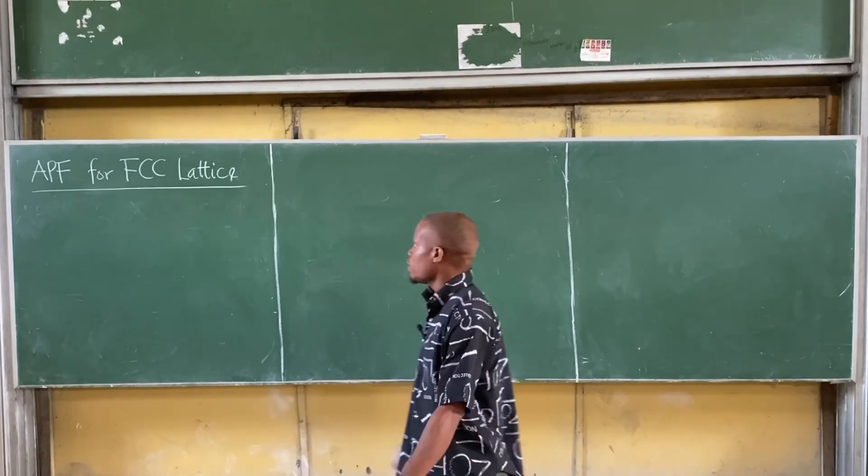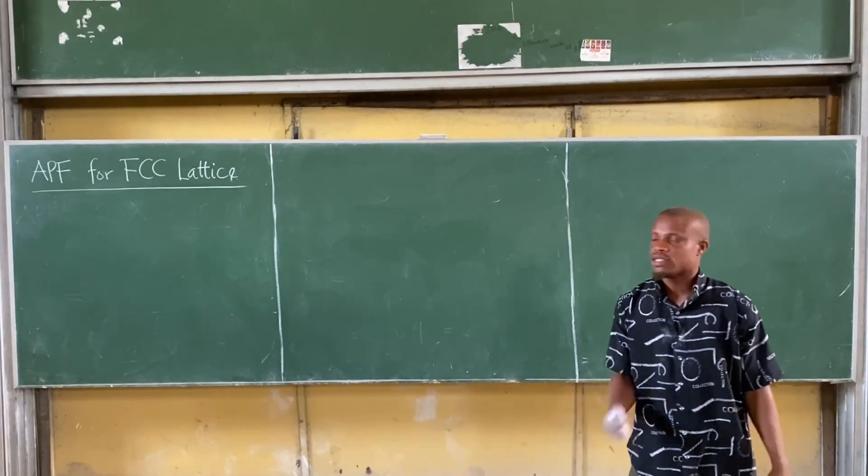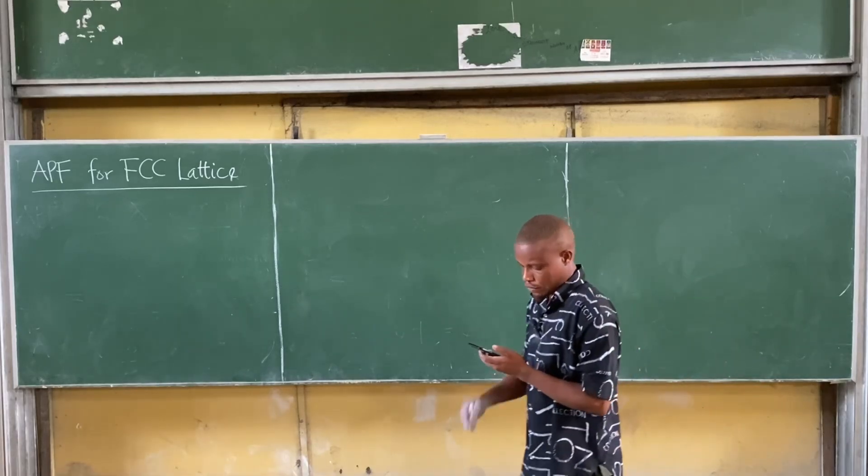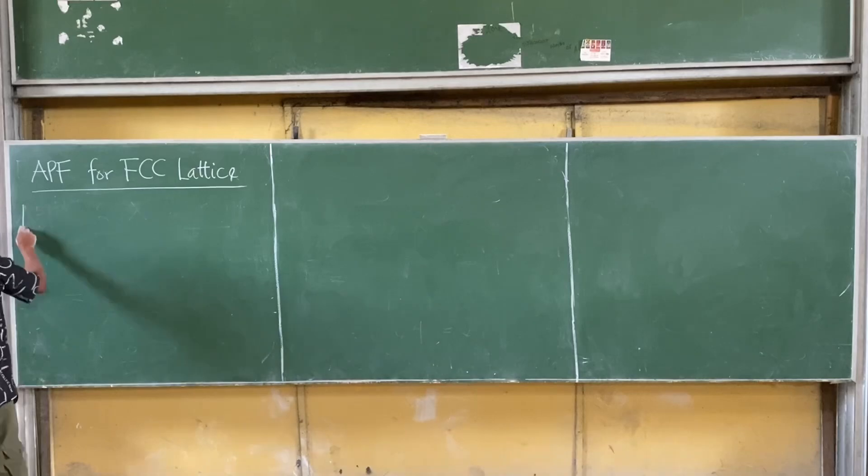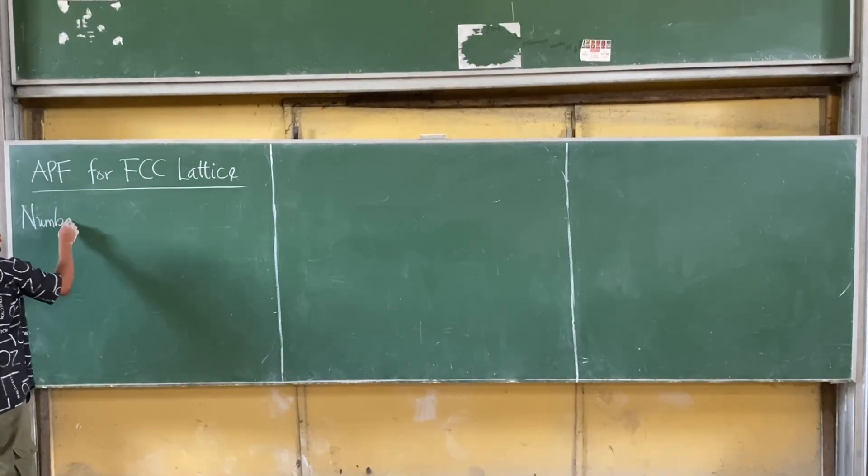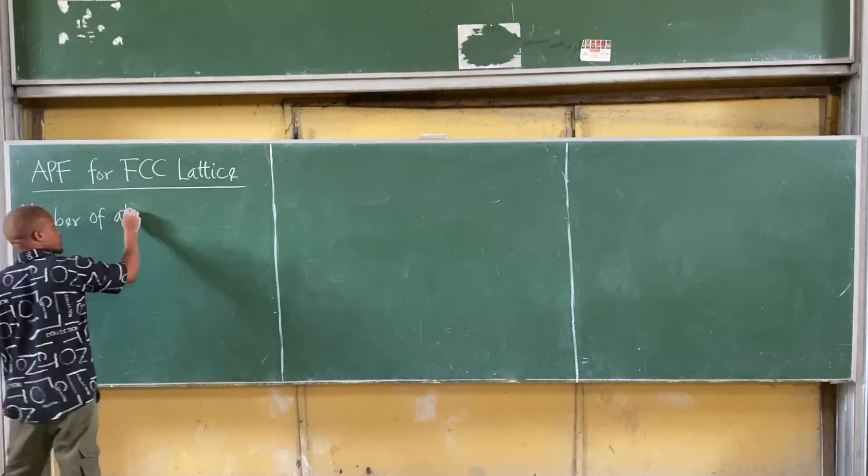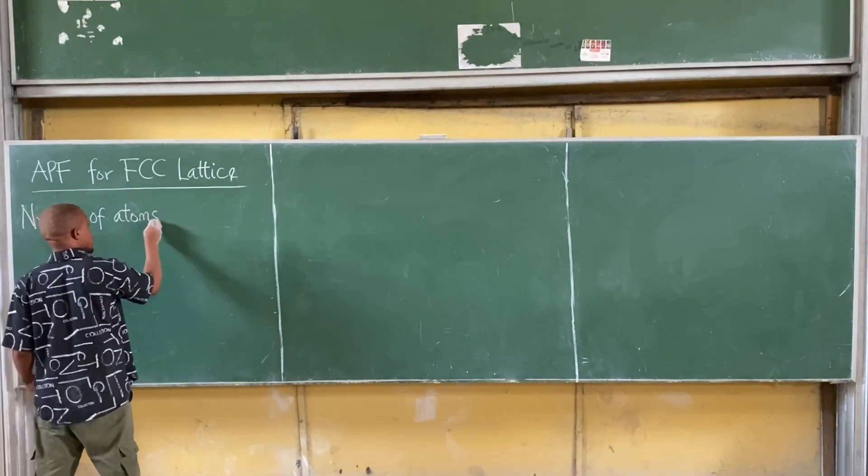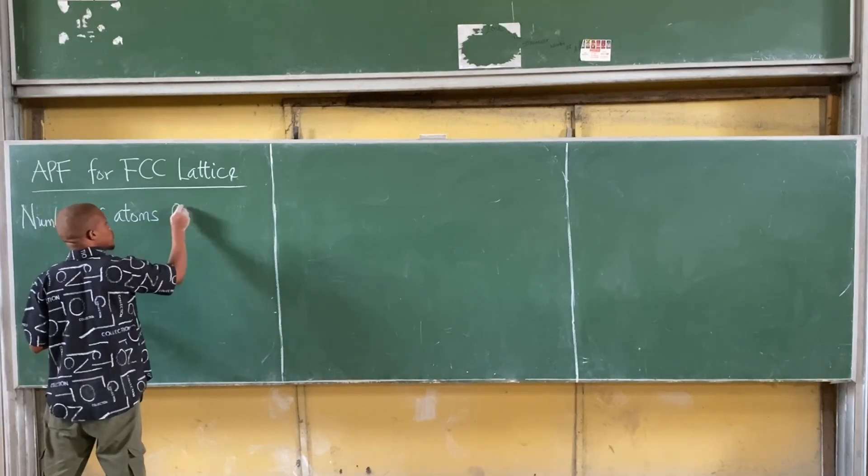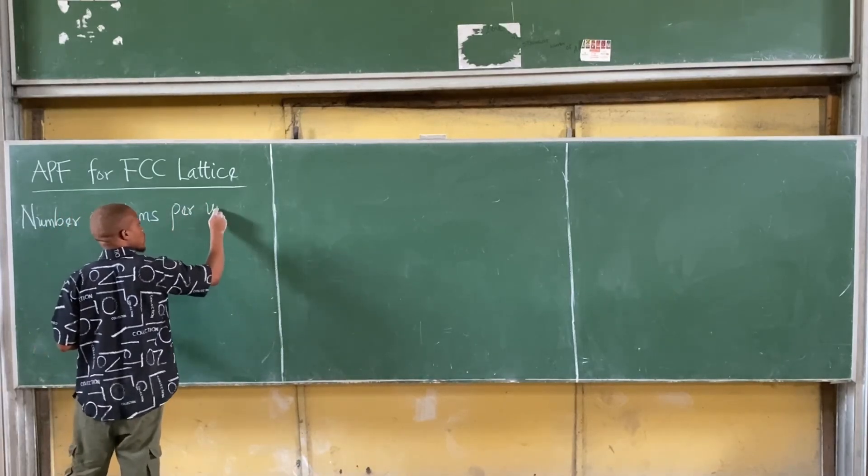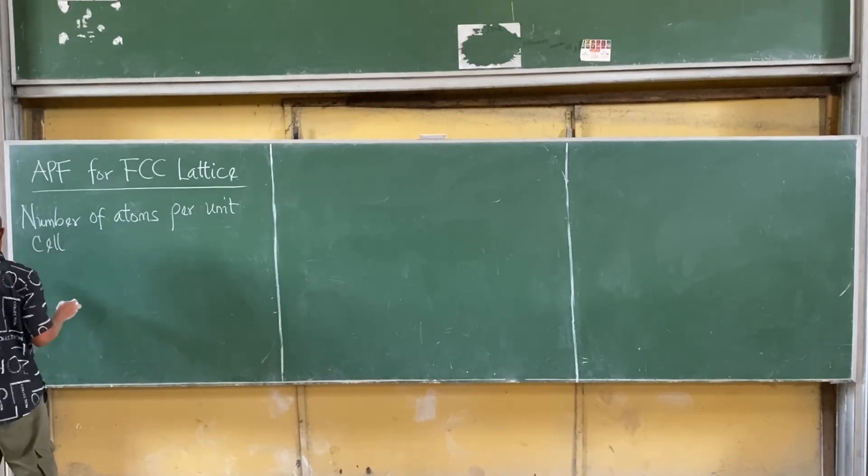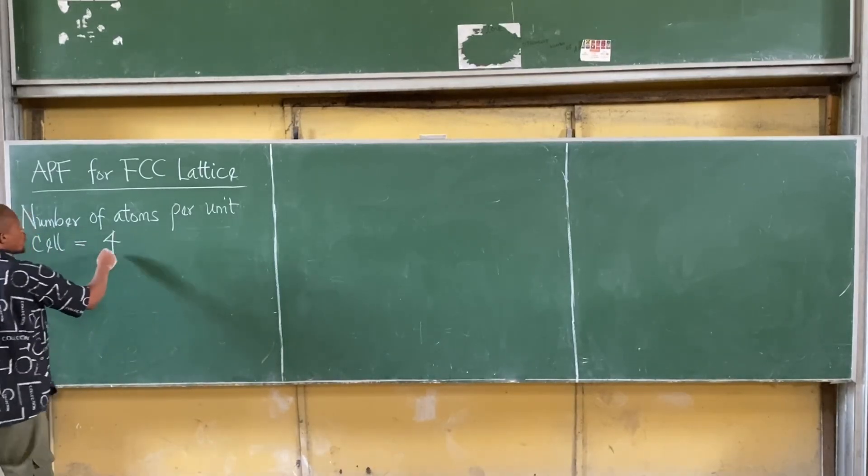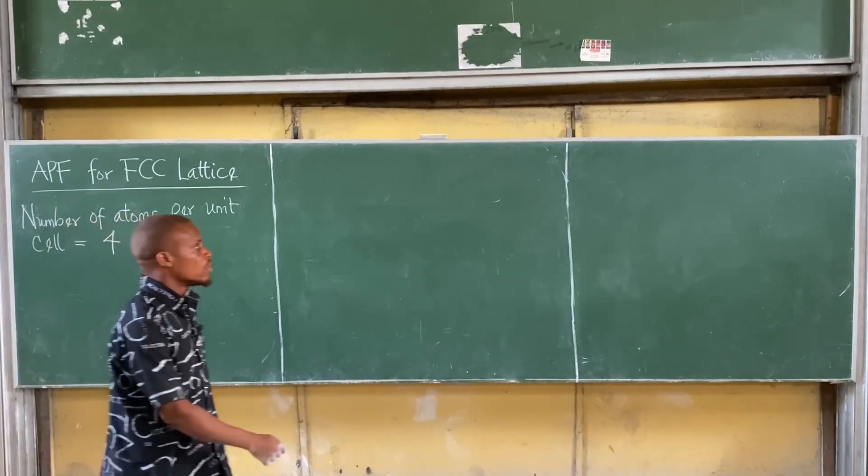Now, let's look at the APF for FCC lattice. Recall that number of atoms per unit cell is equal to 4 for an FCC lattice.